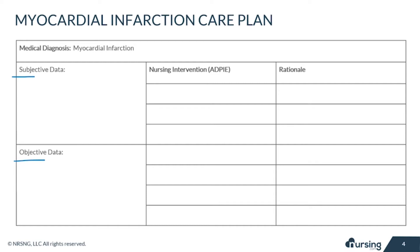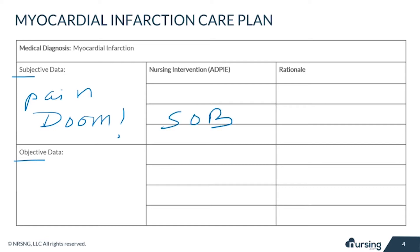Subjective data are things based on your patient's opinions or feelings. For an MI this may include chest pain or chest pressure and squeezing, a feeling of impending doom, and shortness of breath. Be sure to do a pain assessment — for example, the PQRST assessment for pain.